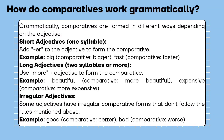How do comparatives work grammatically? Comparatives are formed in different ways depending on the adjective. Short adjectives, one syllable: add -er to the adjective to form the comparative. Example: big — comparative: bigger. Fast — comparative: faster.